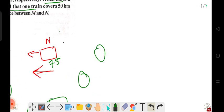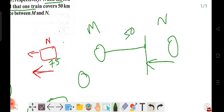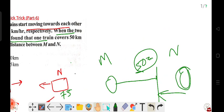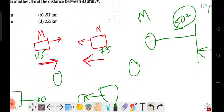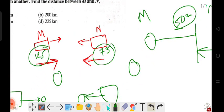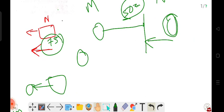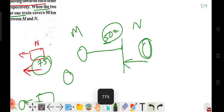In this scenario, both trains meet at a point. The first train M covers a certain distance at its speed, and train N covers the remaining distance at 75 km/hr until they meet.